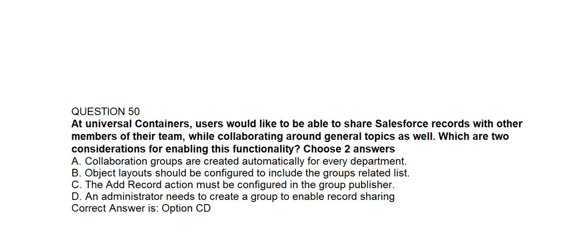Question number fifty. At Universal Containers, users would like to be able to share Salesforce records with other members of their team while collaborating around general topics. Which two considerations apply for enabling this functionality? Option A: Collaboration groups are created automatically for every department. Option B: Object layouts should be configured to include the group related list. Option C: The add record action must be configured in the group publisher. Option D: An administrator needs to create a group to enable record sharing. Correct answer is Option C and Option D.